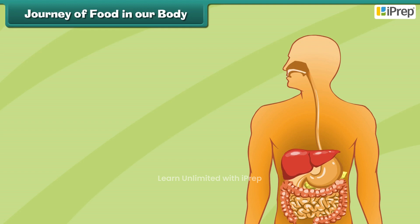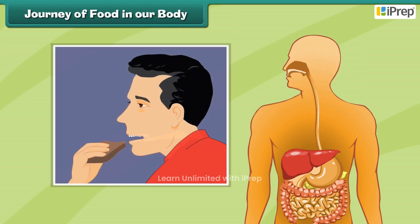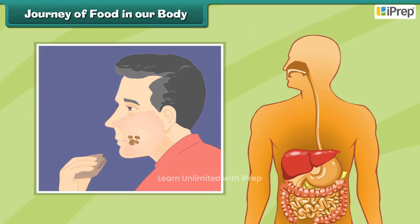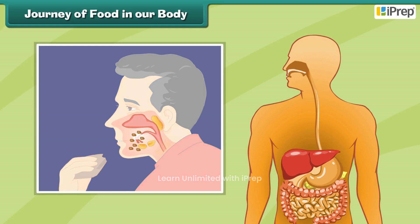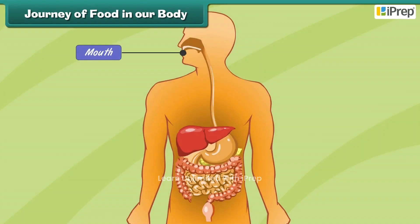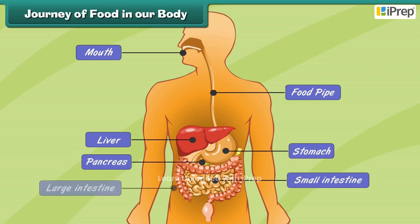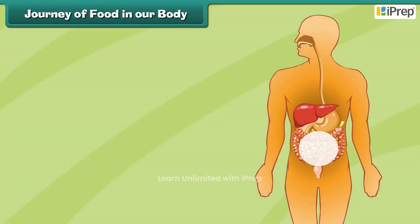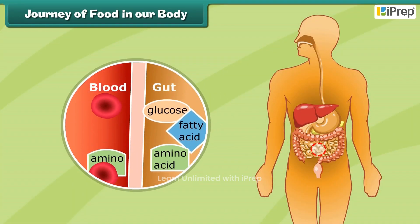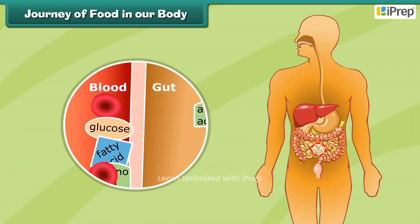Journey of food in our body: The food we eat is broken into smaller and simpler parts in our body. This process is called digestion. The mouth, food pipe, stomach, liver, pancreas, small intestine, and large intestine are the main body parts involved in digestion. The blood absorbs this digested food and takes it to all parts of the body.